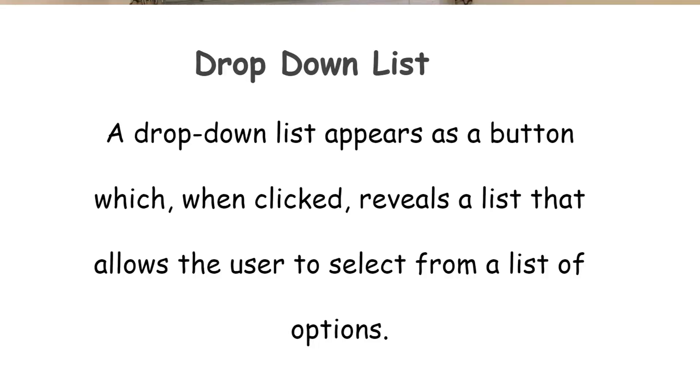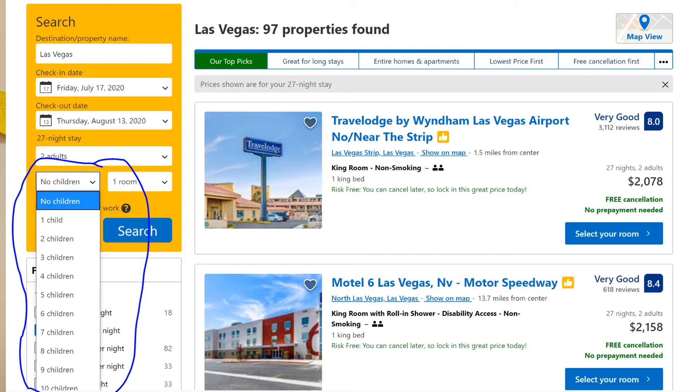Next is the drop-down list. A drop-down list appears as a button which, when clicked, reveals a list of options for the user to choose from. Going back to our booking.com example, as soon as you enter your destination, a small box opens up in the window below on the left side of the page. It has buttons which, when pressed, reveal a list of options to choose from, helping to customize your search for a better user experience.